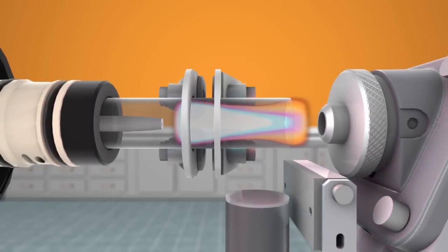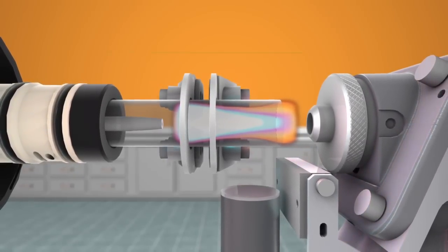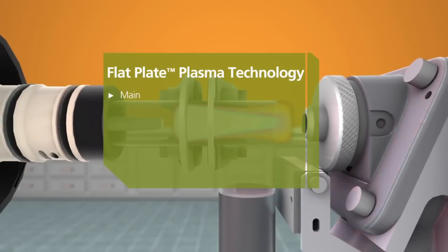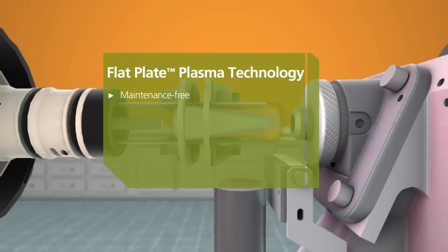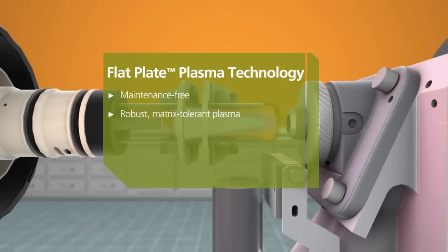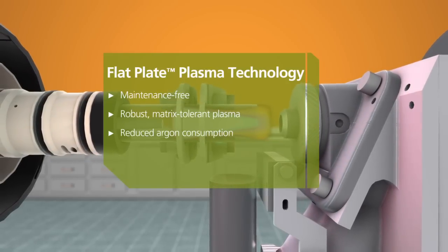By replacing traditional helical load coils that require adjusting and cooling with maintenance-free, perfectly symmetrical flat plates, the patented RF generator produces an equally robust and matrix-tolerant plasma using half the argon of traditional ICP instruments.